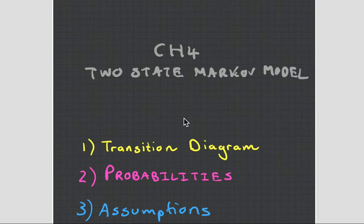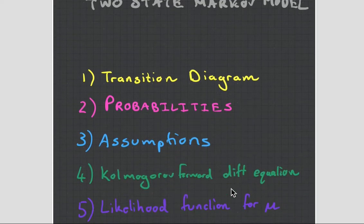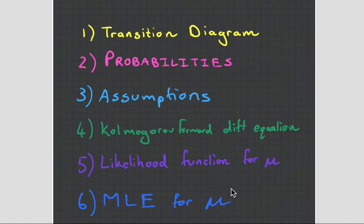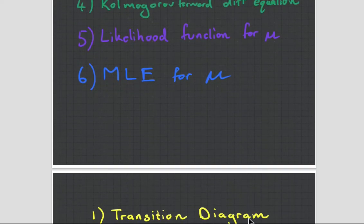Hey guys, it's MJ, the student actuary, and we're going to be looking at the two-state Markov model. This is chapter 4 for subject CT4. Hopefully we have enough time to get through all six of these topics: transition diagrams, probabilities, assumptions, the Kolmogorov forward differential equation, the likelihood function for mu, and the maximum likelihood estimator for mu. So without further ado, let's get into it.